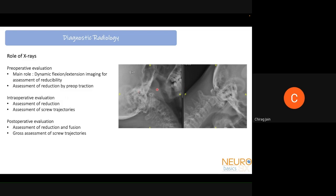X-rays can also be used preoperatively when applying traction to reduce atlanto-axial instability, to assess whether reduction has occurred. Intraoperatively, they are used for screw trajectory assessment using C-arm and for assessing reduction, since placement of traction and muscle relaxants can also reduce the AAD. Postoperatively, they are used for evaluation of reduction and fusion, and gross assessment of screw trajectories.